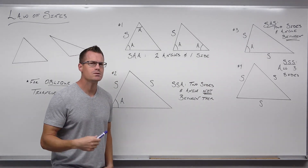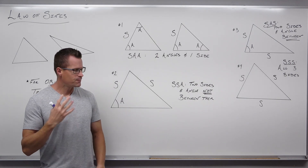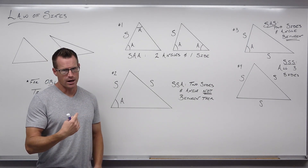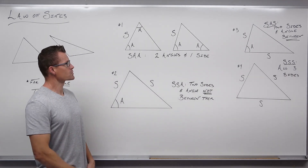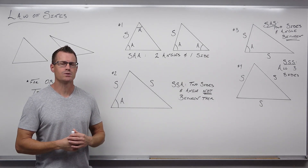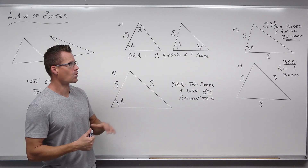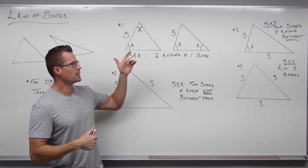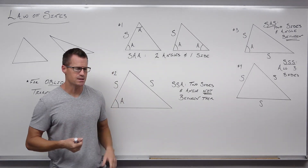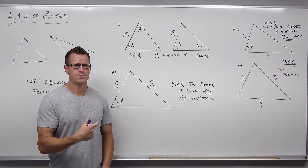So the first thing is: when do they work? There are really four cases — four cases of oblique triangles that we can solve. The first one is: what if you know two angles and one side? Or what if you know two sides and one angle? Or all three sides? Or two sides and an angle, but the angle is between those two sides — those sides would be adjacent to the angle. These are the four cases we can solve with law of sines and law of cosines.